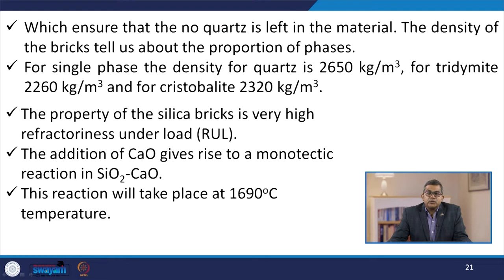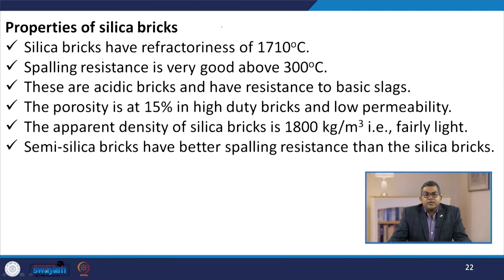The transformation of alpha to beta quartz is a fast process, so heating beyond 573°C must be slow. Cooling from 300 to 100°C is also slow for metastable transformation of cristobalite to tridimite. Hard firing ensures that no quartz remains in the material. The density of the bricks indicates the proportion of phases: quartz is 2650 kg/m³, tridimite is 2260 kg/m³, and cristobalite is 2320 kg/m³.